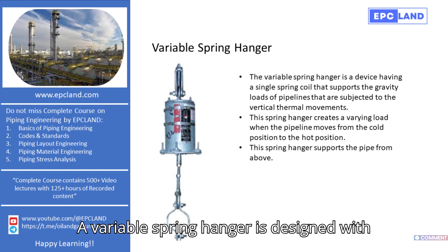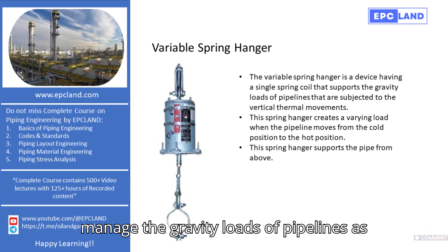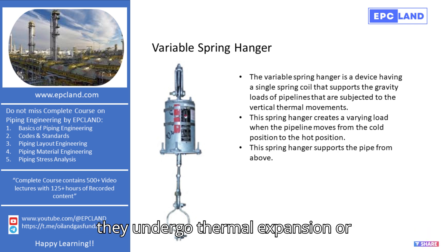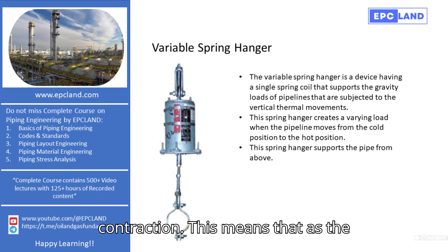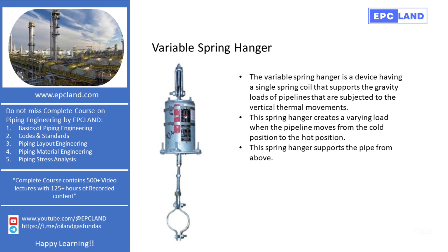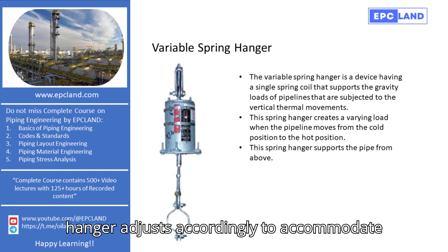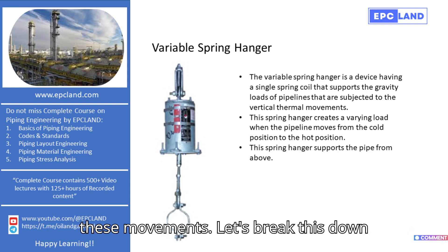A variable spring hanger is designed with a single spring coil and is used to manage the gravity loads of pipelines as they undergo thermal expansion or contraction. This means that as the temperature changes, the pipeline will either expand or contract, and the spring hanger adjusts accordingly to accommodate these movements.